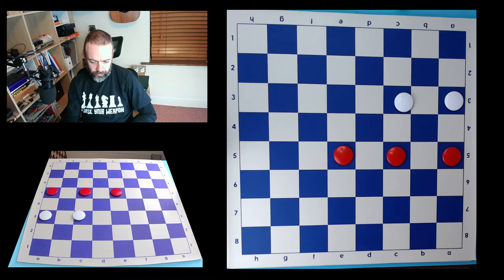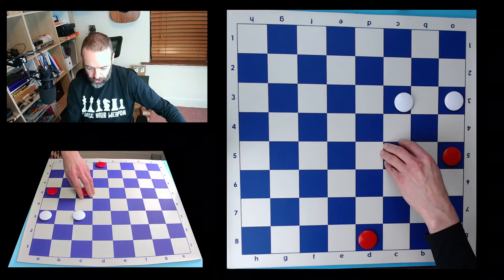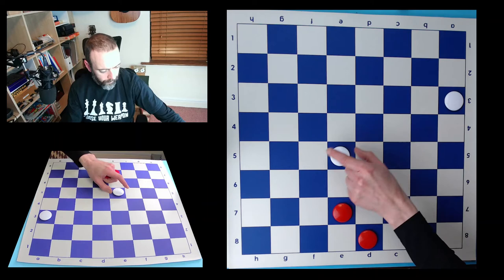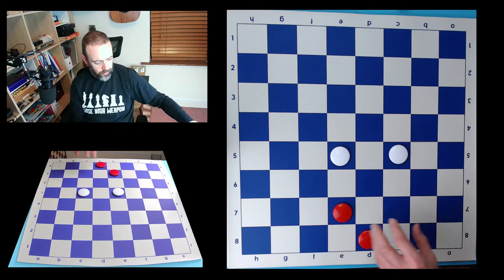So slow positional play is very important, but also shots. Shots are tricks and tactics where you'll do what's called a 2 for 1, or a 3 for 1, or a 3 for 2, where you give away a smaller number of pieces to win a greater number of pieces.